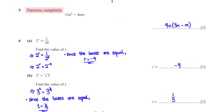Factorize completely: 12n squared minus 4mn. The common factor is 4n. When we factor that out, we are left with 3n minus m. So we have 4n into bracket 3n minus m.